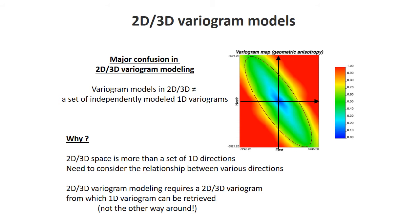To summarize: we calculate variograms along various directions and provide that visually by looking at individual directions and 1D variograms. What you have to realize is that these 1D variograms, when calculated in 2D or 3D data, are really intersections of a 2D or 3D variogram. This is often a major source of confusion in variogram modeling.